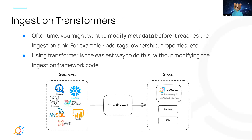So what are ingestion transformers? Some of you may already be familiar with this, some of you may not. This is a very basic flow of metadata ingestion in DataHub: data comes from data sources and goes to a sink, and most of the time the sink will be the DataHub instance. Often you might want to modify metadata before it reaches the sink — for example, you might want to add tags, ownerships, properties, or set customized browse paths. Using a transformer is the easiest way to do this without modifying the ingestion framework code.